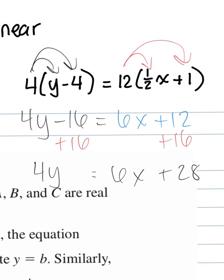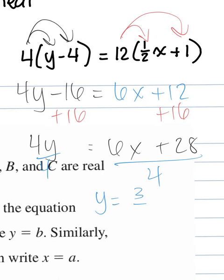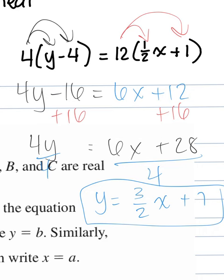You divide everything by 4. So we get y equals — 6 is not evenly divisible by 4, so it stays as a fraction. Can we simplify 6 over 4? Yes, to 3 over 2. Is 28 evenly divisible by 4? Yes, it becomes 7. So y equals 3/2 x plus 7. We have an m of 3/2 and a b of 7. This is y equals mx plus b form — it is linear.